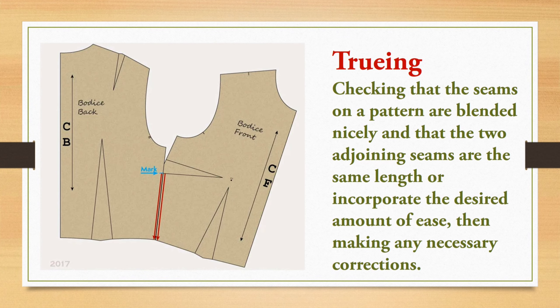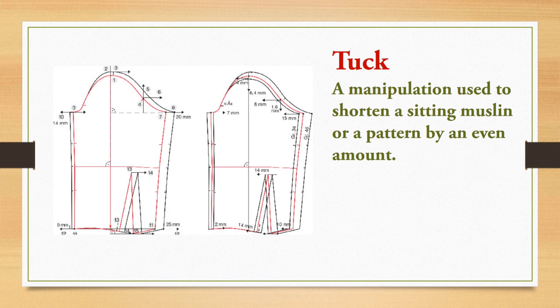The next term is truing. Truing means blending the edges of a pattern. For example, when making a dress using different pattern pieces, the edges must be blended together smoothly. Suppose we are joining a sleeve to an armhole — it needs to be blended nicely and smoothed out. That process is called truing.